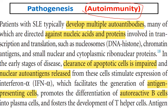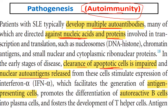Autoimmunity is the main mechanism for the pathogenesis of lupus nephritis. The immune system forms autoantibodies against self-antigens, especially nuclear proteins. During apoptosis and cell degradation, the clearance of apoptotic cells is impaired, leading to release of nuclear autoantigens. Antigen-presenting cells facilitate this process, with differentiation of autoreactive B cells into plasma cells that form autoantibodies against nuclear antigens — including antinuclear antibody (ANA) and anti-double-stranded DNA.